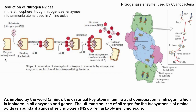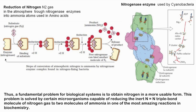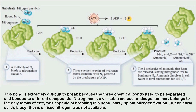Nitrogen is included in all enzymes and genes. The ultimate source of nitrogen for biosynthesis of amino acids is abundant atmospheric nitrogen — a remarkably inert molecule. A fundamental problem for biological systems is to obtain nitrogen in a more usable form. This problem is solved by certain microorganisms capable of reducing the inert triple-bond molecule of nitrogen gas to two molecules of ammonia, via nitrogenase — a molecular sledgehammer and the only enzyme family capable of breaking this bond.